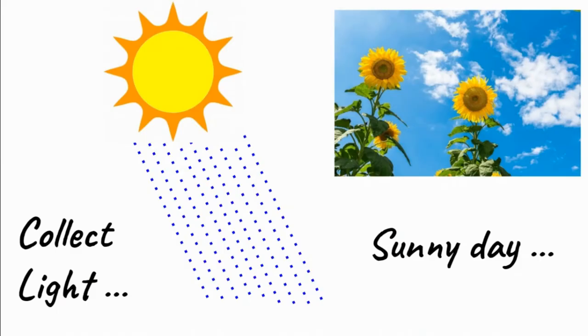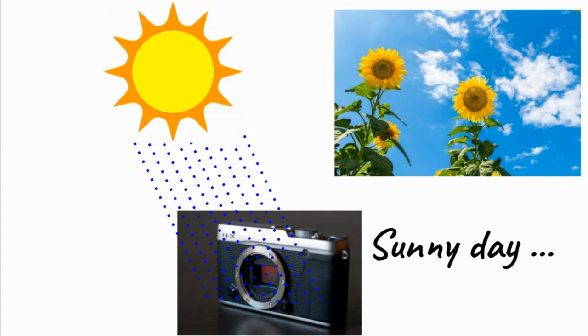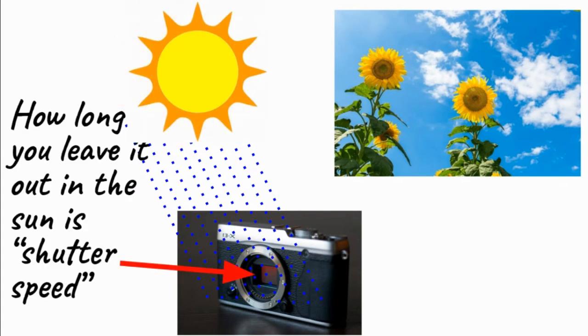Now consider light rays on a sunny day instead of rain. Collecting light works in a similar manner. You leave your bucket out in the sun or any light source to collect light. How long you leave it out in the sun to collect light is simply shutter speed.